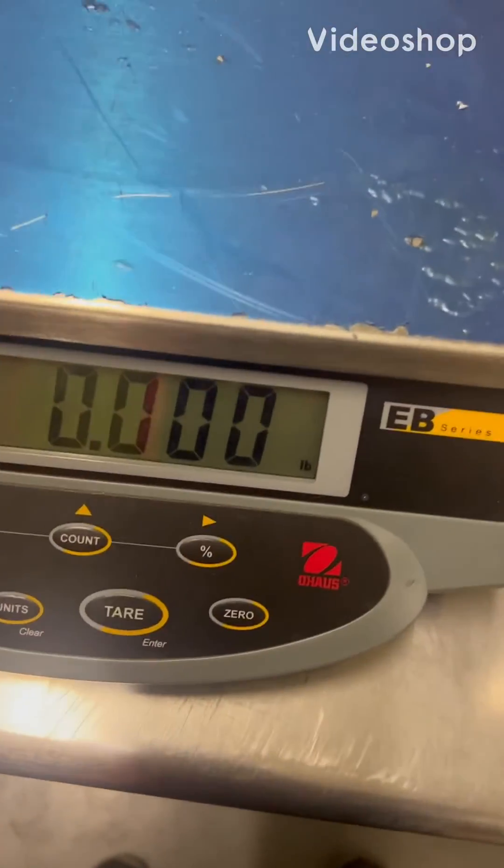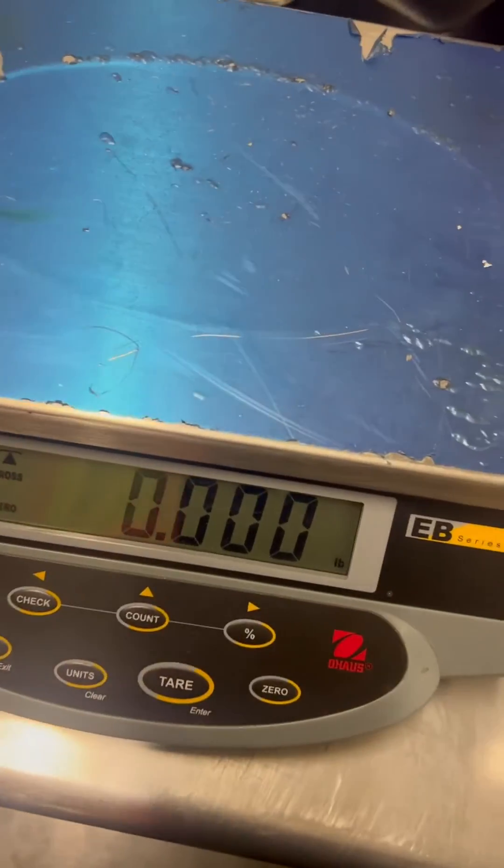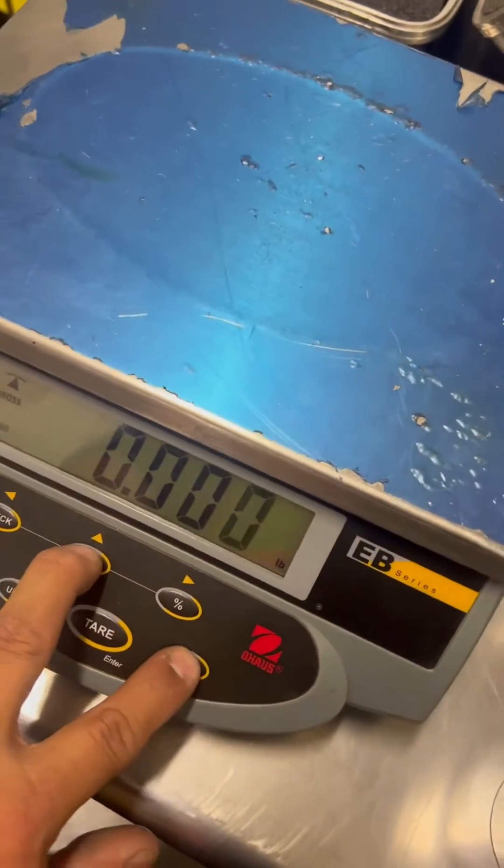This is a calibration adjustment of an old Ohaus EB series scale. Basically, you would hold down the count and the zero key at the same time.